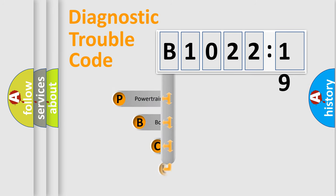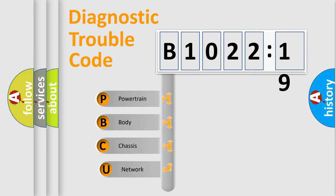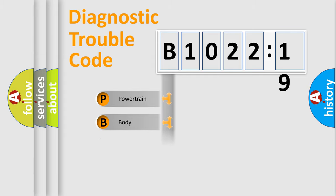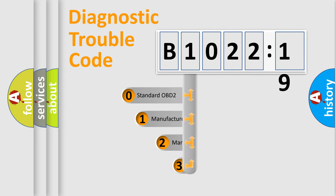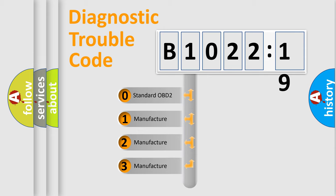First, let's look at the history of diagnostic fault code composition according to the OBD2 protocol, which is unified for all automakers since 2000. We divide the electric system of an automobile into four basic units: Powertrain, Body, Chassis, and Network. This distribution is defined in the first character of the code.